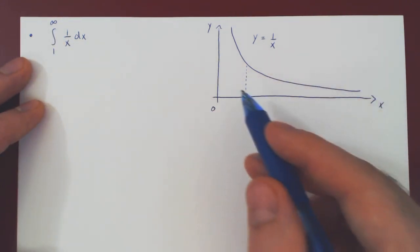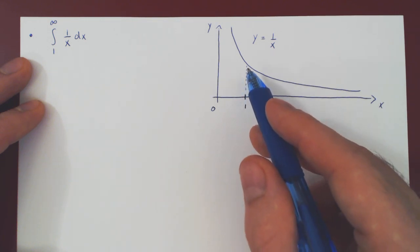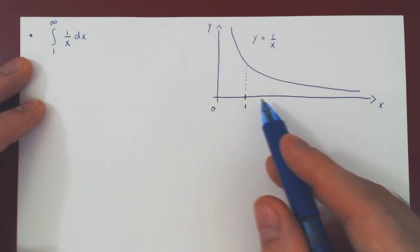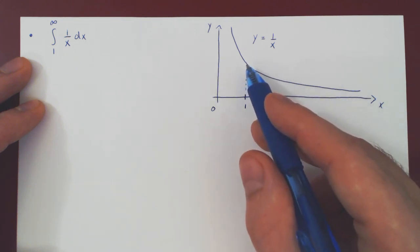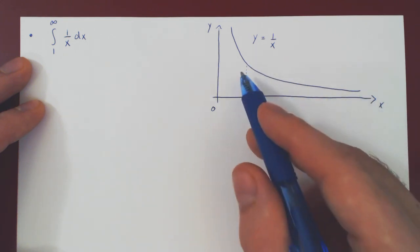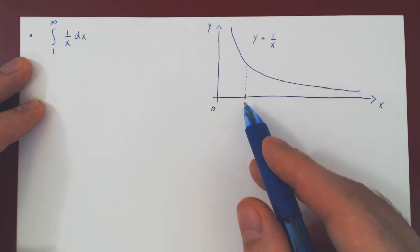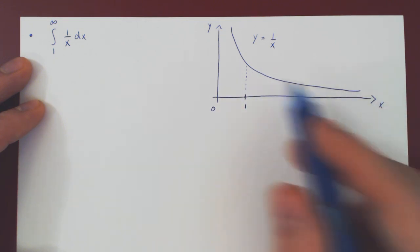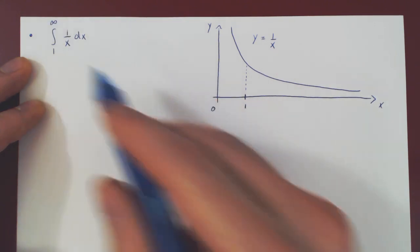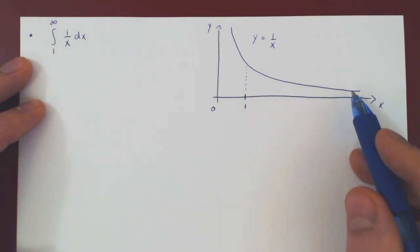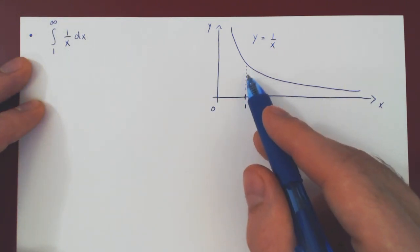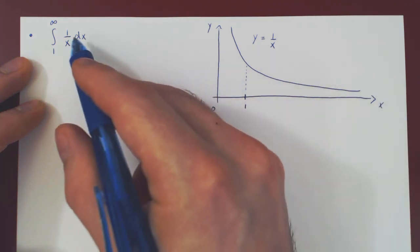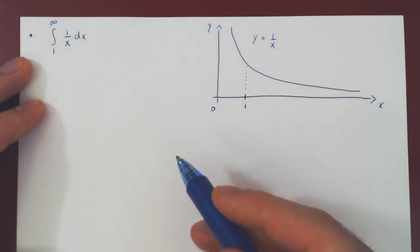Geometrically, if you look at the region bounded by the x-axis, the curve y equals 1 over x, and the vertical line x equals 1, we have this infinitely long region with no right upper bound. We're asking: what is its area, if of course it does exist?